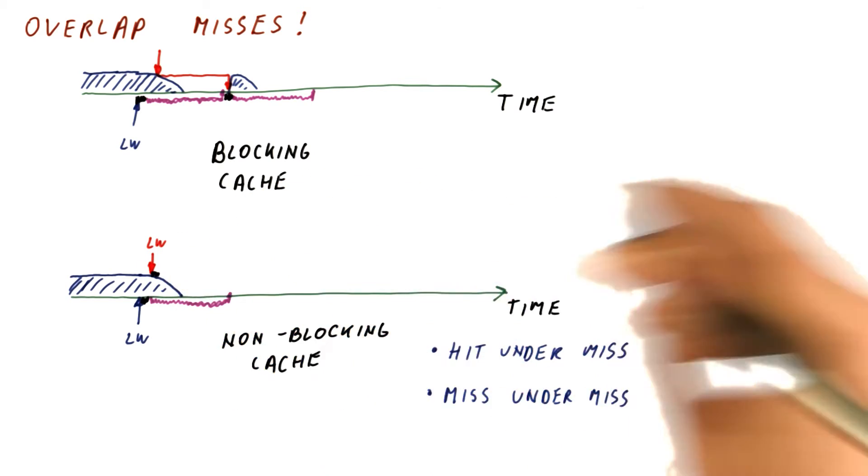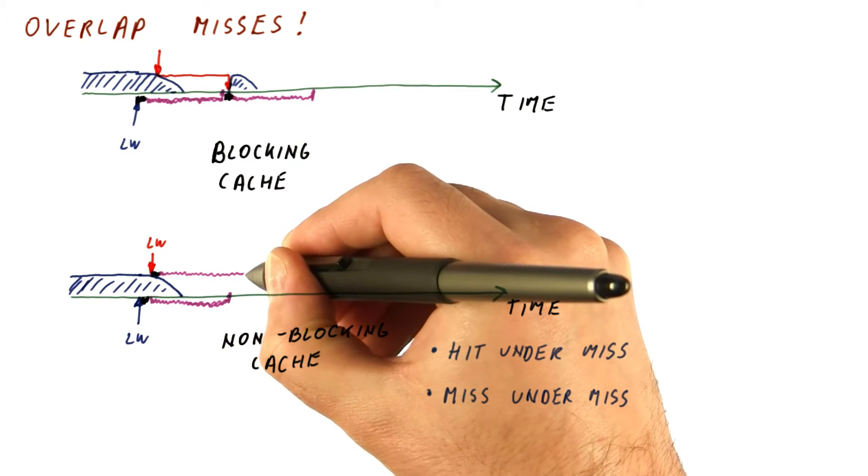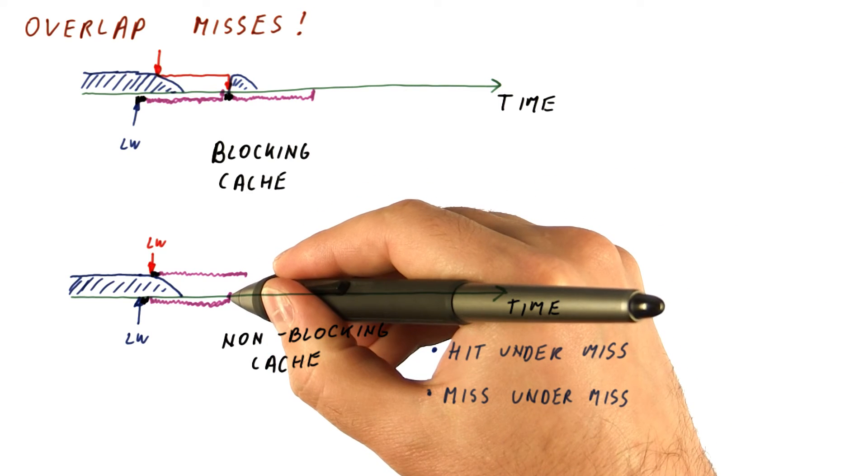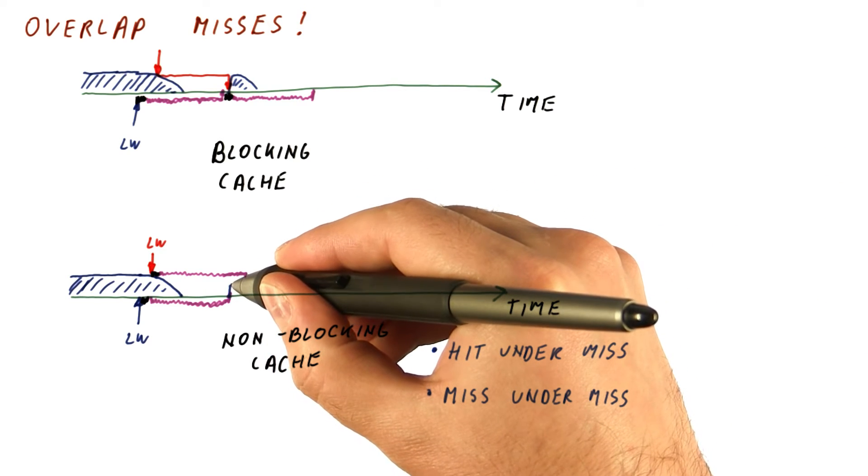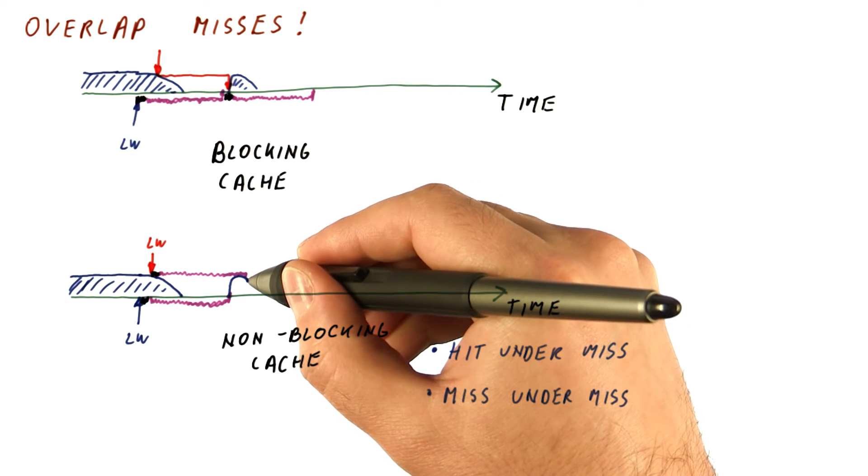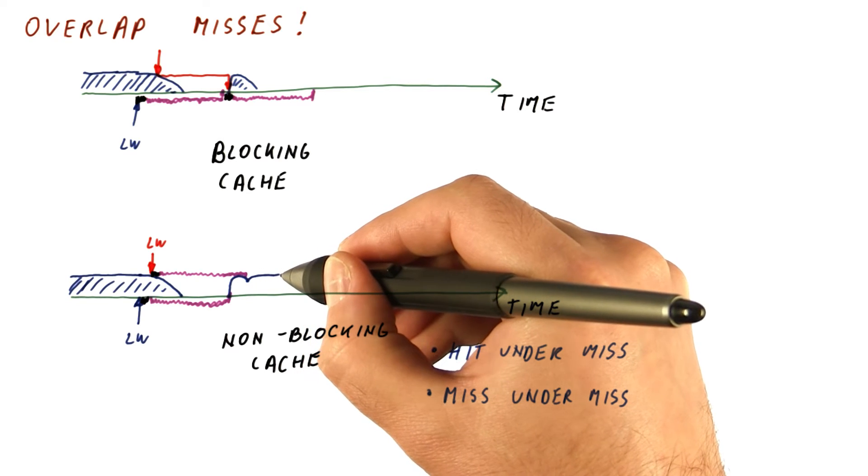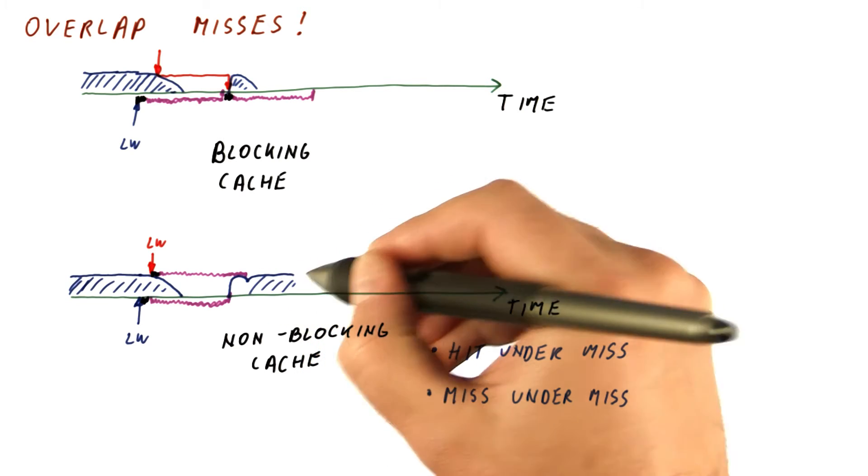And when we realize it's a miss, we will send it to memory, so it will come back here. Now what we have is when the first load comes back from memory, there is a burst of activity. It starts dying out because we're still waiting for the second load. But then the second load comes back and we are very quickly back to our normal operation.